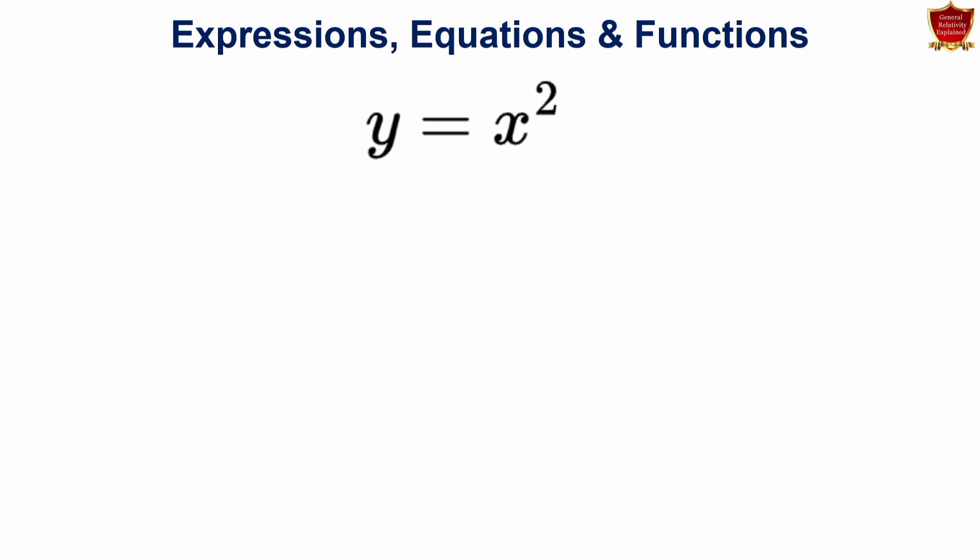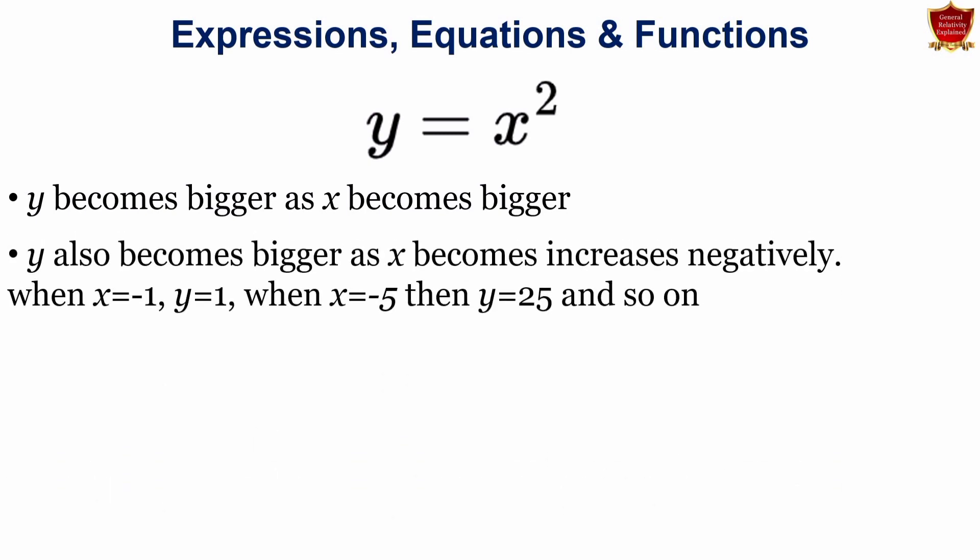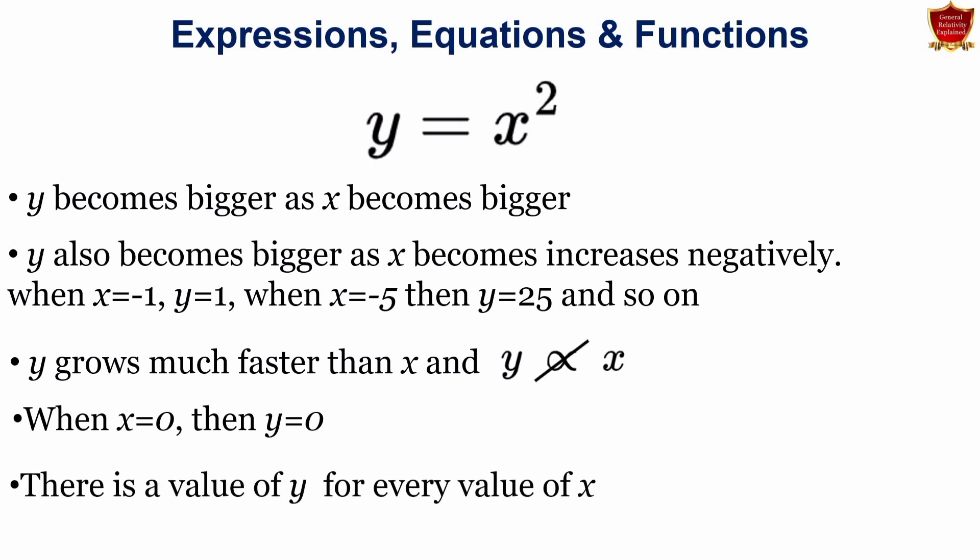We take few more examples. For example, y equal to x squared. It implies that y becomes bigger as x becomes bigger. Because y is a function of x squared, also y also becomes largely larger as x negatively increases. Because we know that minus times minus gives a plus. For example, here I have shown that x equals to minus 1 and y equals to 1. x equals to 5 if y equals to 25 and so on. Because y is a function of x squared, y grows much faster than x and it is not proportional to x. When x equals to 0, y equals to 0 and there is a value of y for every value of x.